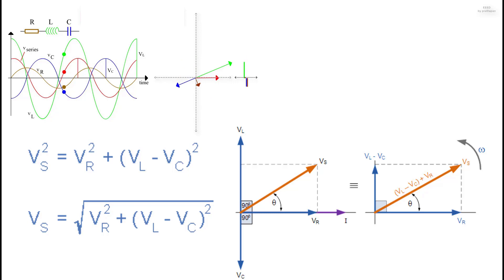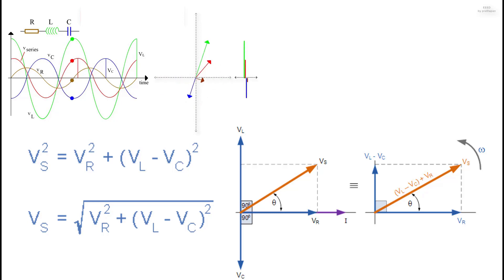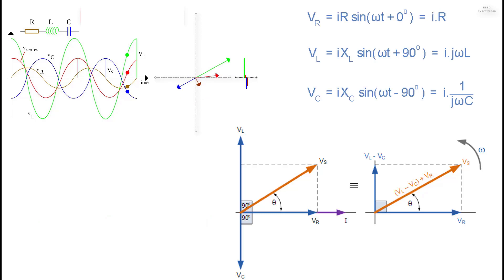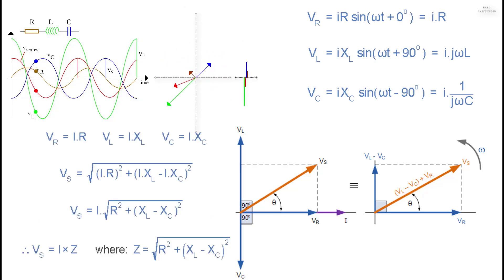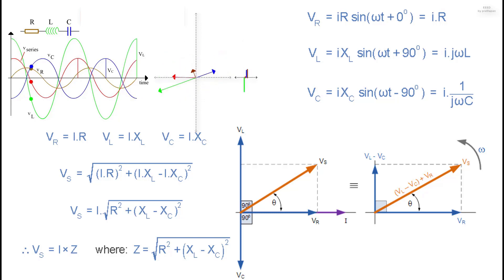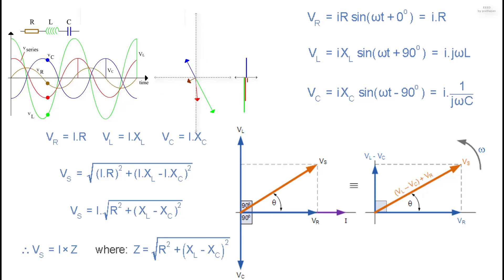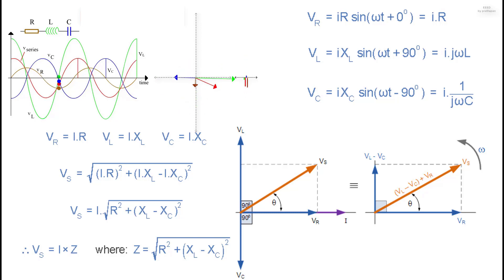The current has the same amplitude and phase in all components of a series RLC circuit. By substituting the individual voltage expressions into the Pythagoras equation for the voltage triangle, the amplitude of the source voltage is proportional to the amplitude of the current. This proportionality constant is the impedance of the circuit, which depends upon the resistance and the inductive and capacitive reactance. The total reactance XT of any series RLC circuit is defined as XT = XL − XC or XT = XC − XL, whichever is greater.